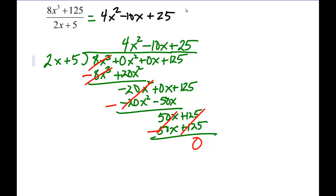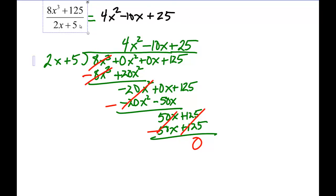Now I want you to notice a little pattern. In our quotient, this first term is always the square of the first term of the divisor — so 4x squared is the square of 2x. The last number is this term squared. And then the middle term is the product of these two terms with an opposite sign — the product of 2x and 5 is 10x, but with an opposite sign. That is a common pattern to this type of division.